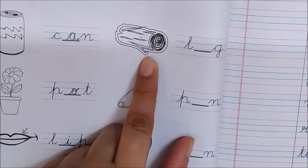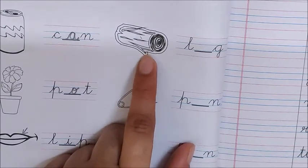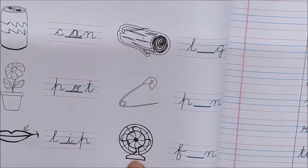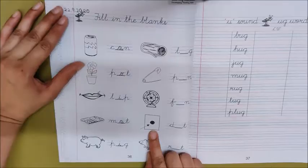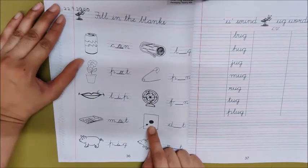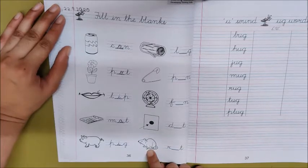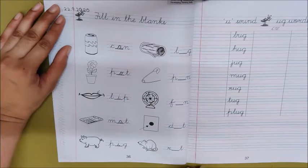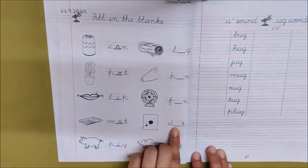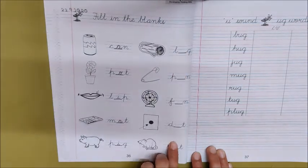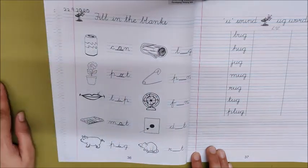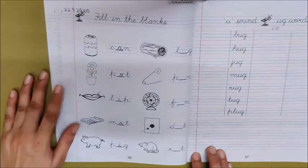Now let us see the next picture. What is this picture, children? Log. Very good. This is a log. What is this? Pin. What is this? Fan. What is this? Look at the arrow. This arrow is pointing to this dot. It is a dot. What is this? Rat.